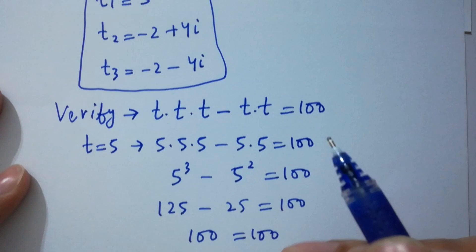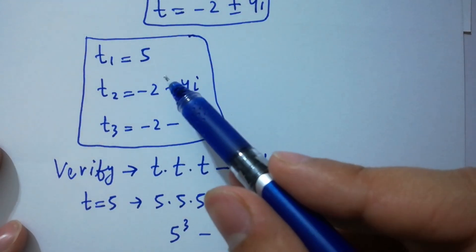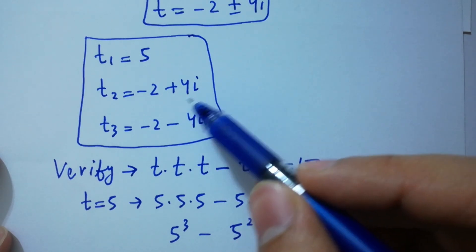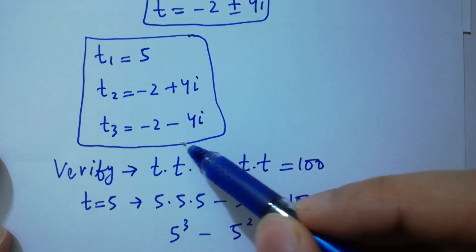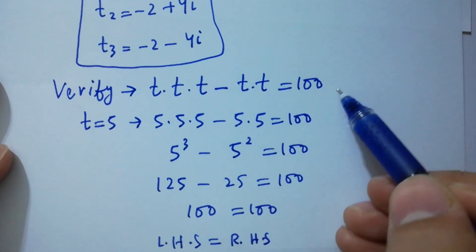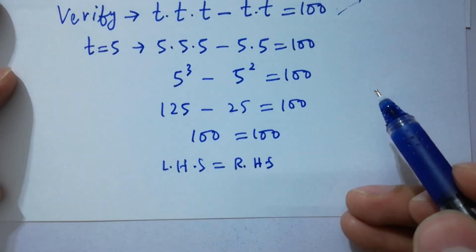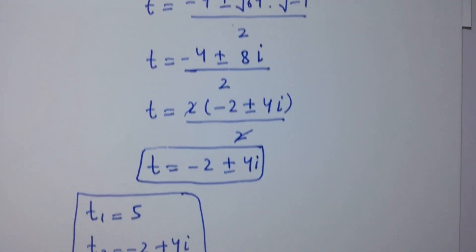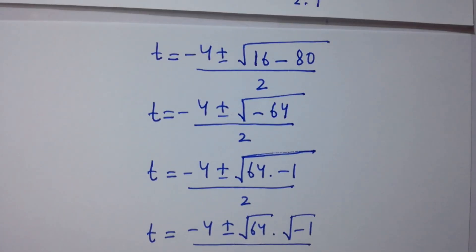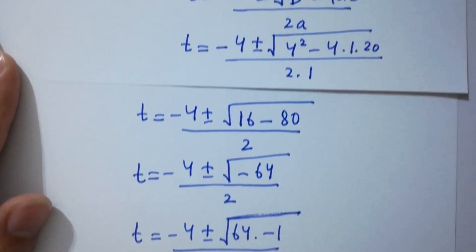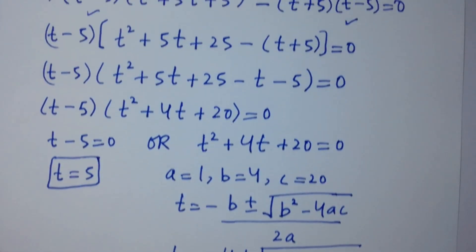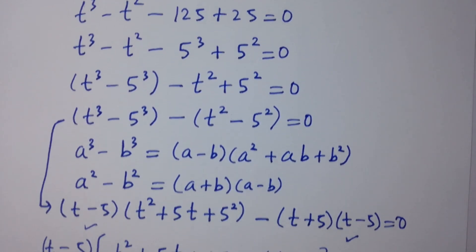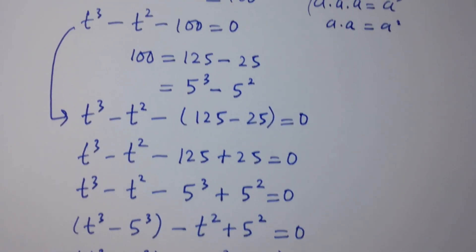This confirms that t equals 5, and similarly you can verify that minus 2 plus 4i and minus 2 minus 4i also satisfy the equation. Thanks for watching this video. Please subscribe to this channel to get notifications of new videos, share with your classmates and friends, and visit the playlist to learn more. Bye!